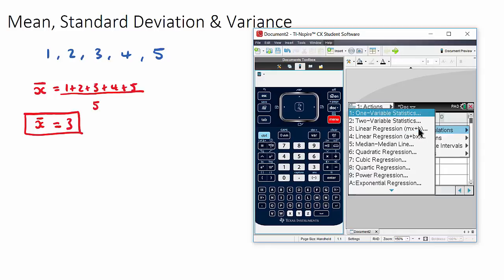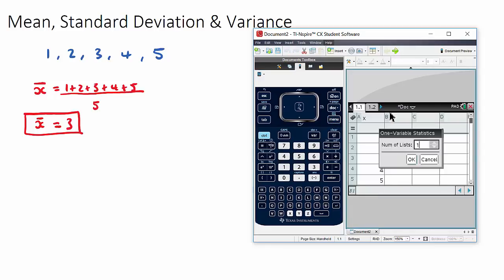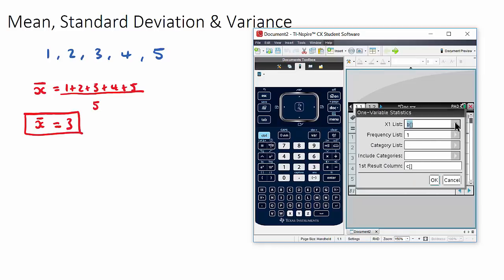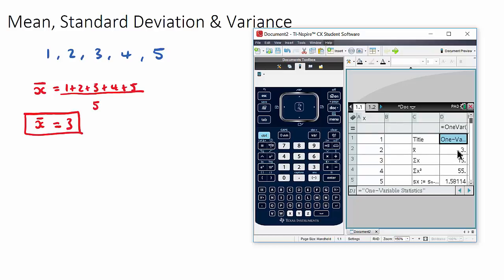And you can just go to menu, statistics, calculations. This is one variable statistics with one list. And our list, we want to give it X. Okay, so it gives us our mean, which was 3. And our standard deviation is this one here, it's the σx, so 1.414.